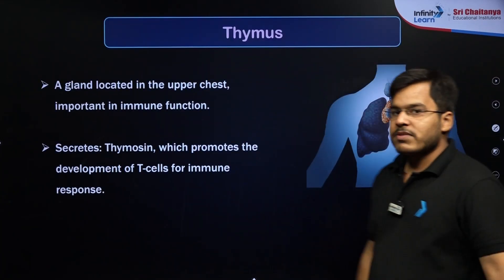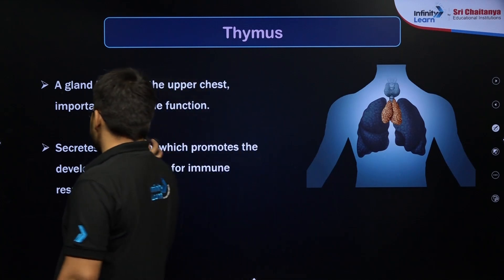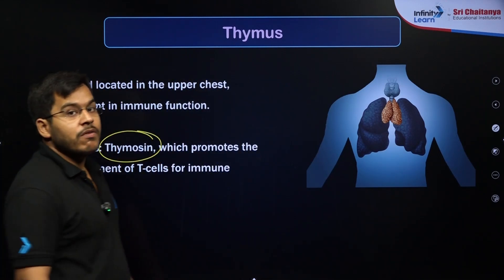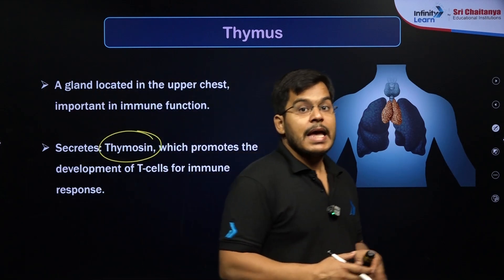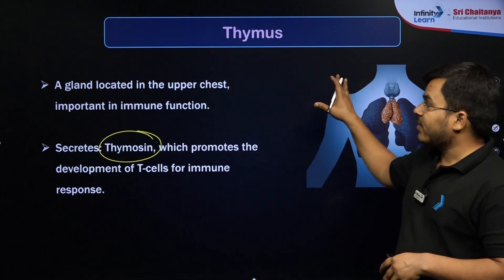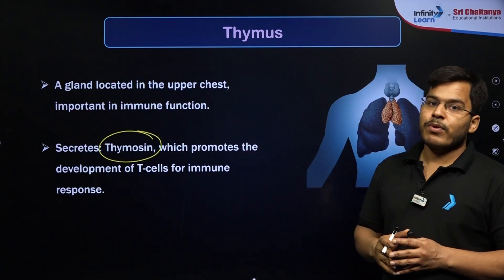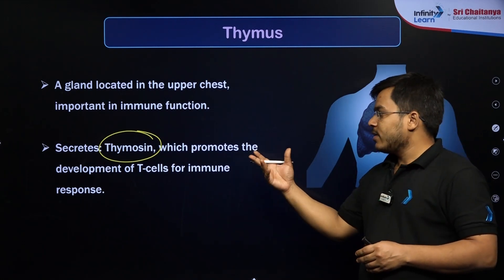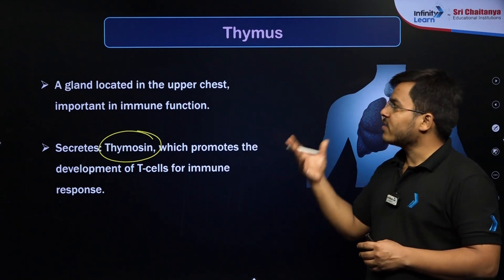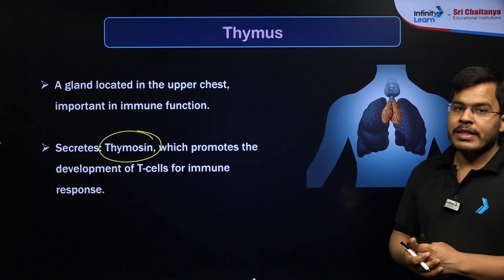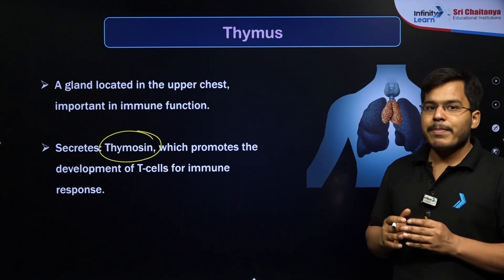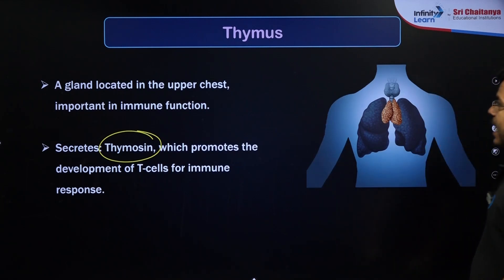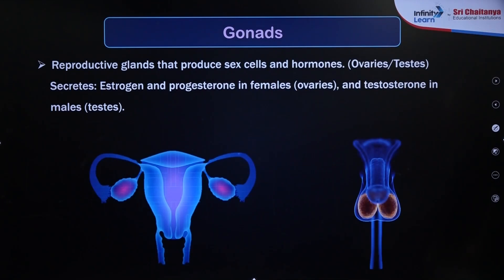The next gland is the thymus, which releases the hormone thymosin. Thymosin has a very important role in maintaining our immune system, because the thymus helps in the maturation of lymphocytes, which are important white blood cells. Therefore, thymosin helps us develop good immune power.